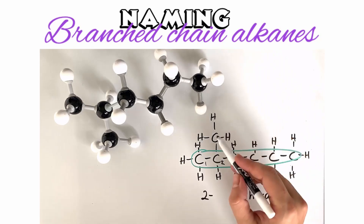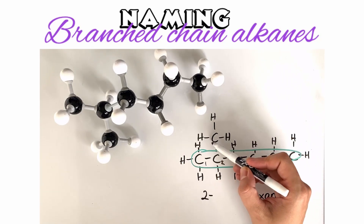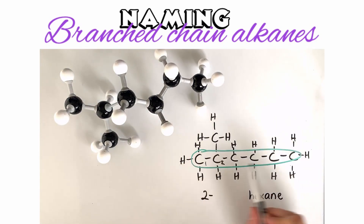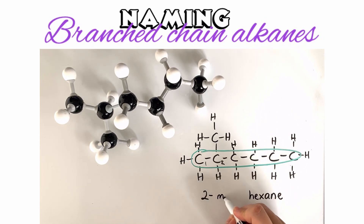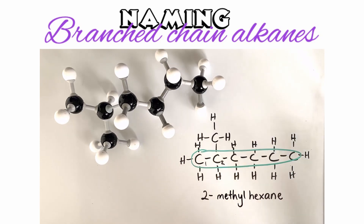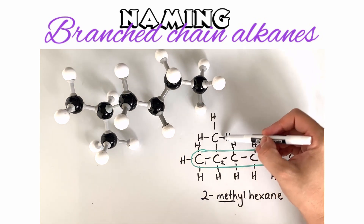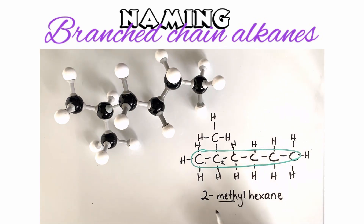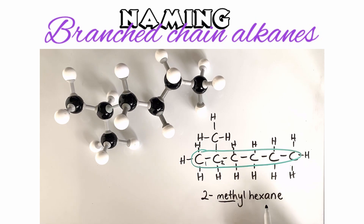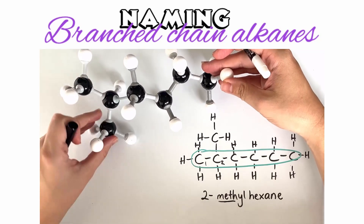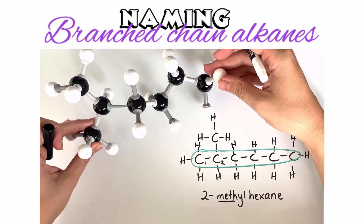This branch is made up of only one carbon and the rest hydrogens, so this is a methane group attached to our hexane. Remember it gets the suffix '-yl', so we call it methyl — 'meth' referring to one carbon atom. The '2' refers to where it's positioned on the parent molecule, which is hexane. So this molecule is called 2-methylhexane.